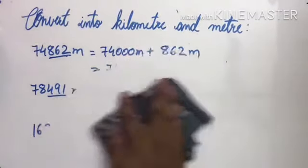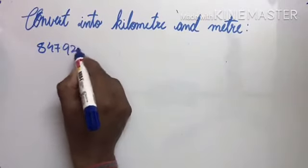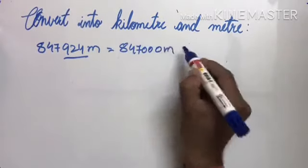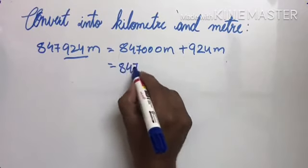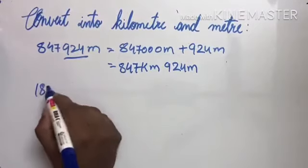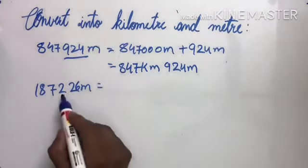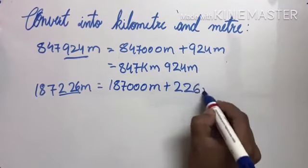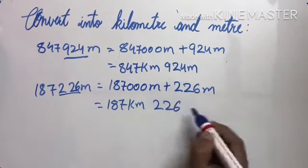A few more examples. Eight hundred forty-seven thousand nine hundred and twenty-four meters: the last three digits become zero, giving eight hundred forty-seven thousand meters plus nine hundred and twenty-four meters. Eight hundred forty-seven thousand meters is eight hundred and forty-seven kilometers, so our answer is eight hundred forty-seven kilometers and nine hundred and twenty-four meters. Similarly, one hundred eighty-seven thousand two hundred and twenty-six meters gives one hundred and eighty-seven kilometers and two hundred and twenty-six meters.